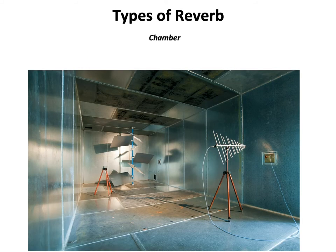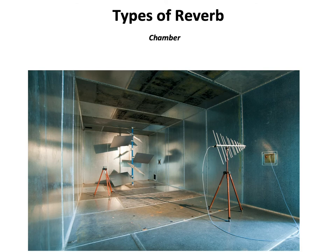One type of reverb is a chamber. Before digital reverb, a studio might dedicate a room with reflective surfaces and use it as a chamber reverb. Sound is sent on a bus from the console into the chamber, where it bounces around and is picked up by two microphones and returned back into the console. This is a very wonderful-sounding type of reverb, but it requires an entire room — or in some cases, a full vault.